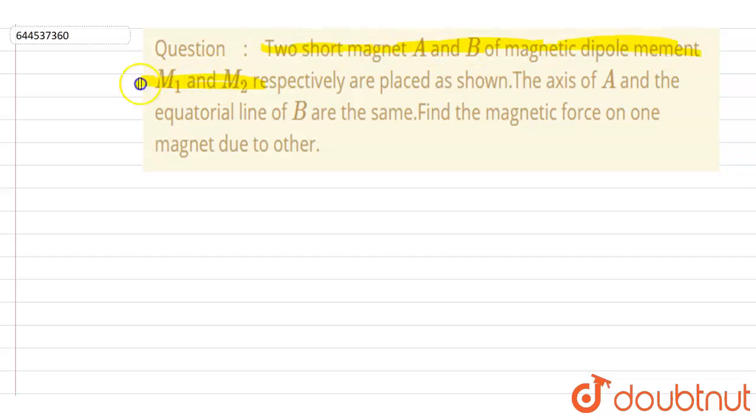Two short magnets A and B of magnetic dipole moment M1 and M2 respectively are placed as shown. The axis of A and the equatorial line of B are the same. Find the magnetic force on the bar magnets due to each other.